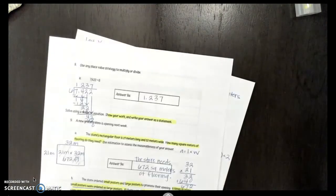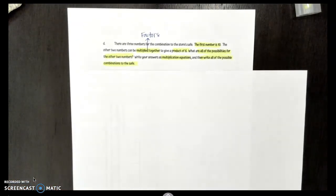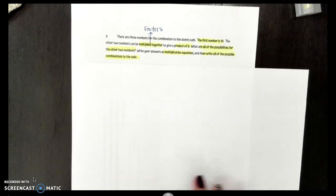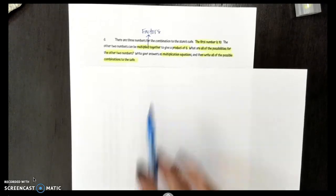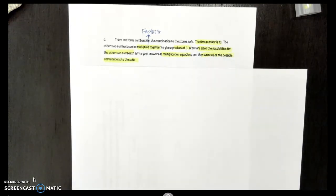All right. Let's take a look at your last and final question. This one is really fun because it talks about factors. You probably may not have realized it. So let's take a look. There are 3 numbers for the combination to the store's safe. The first number is 10. The other 2 numbers can be multiplied together to give a product of 6. So really, it just wants you to tell the factors. If 2 numbers are multiplied together, those give you the factors. What are all of the possibilities for the other 2 numbers?